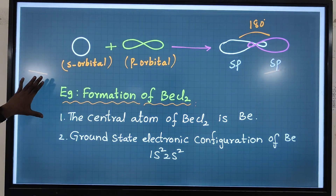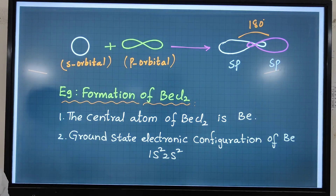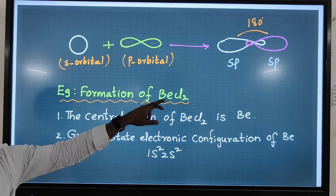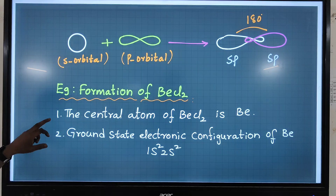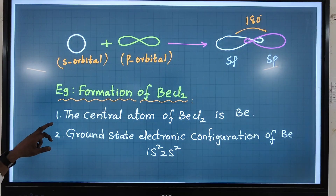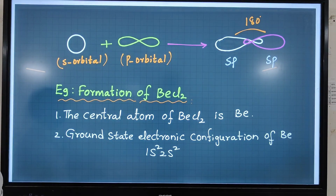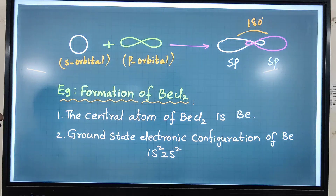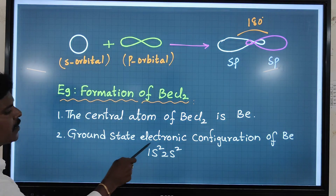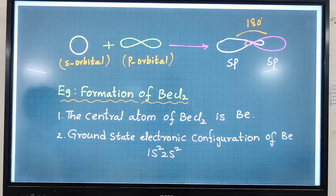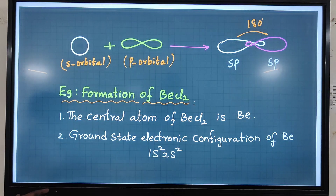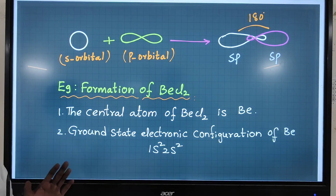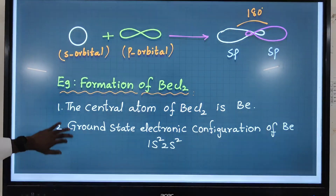Let me explain the example of sp hybridization: the formation of BeCl₂, beryllium chloride. The central atom is Be (beryllium). The atomic number of beryllium is 4, so the ground state electronic configuration is 1s² 2s².